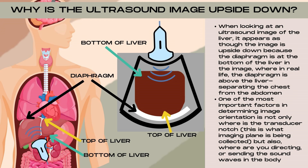Why does the ultrasound image appear like it's upside down? We're going to use the liver as an example. When we're looking at an ultrasound image of the liver, it appears as though the image is upside down because the diaphragm is at the bottom of the liver in the image, where in real life the diaphragm is above the liver. The diaphragm separates the chest from the abdomen.